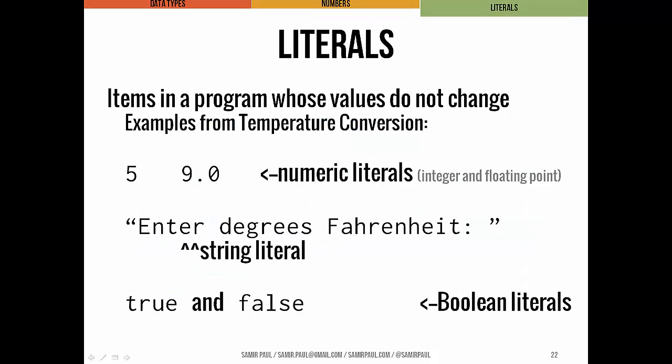We define literals basically in contrast to variables. Variables can change — their values can change. Literals cannot change. If you think about 5, or 9.0, or the string "enter degrees in Fahrenheit", or true and false — those are Boolean literals. These are values that just don't change. You're not going to change the value of 5. That's why we call it a literal — we just take it at face value.